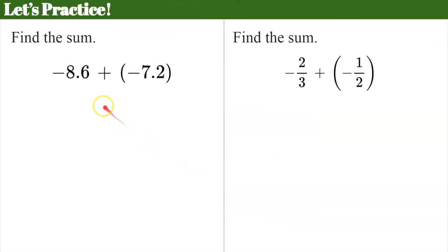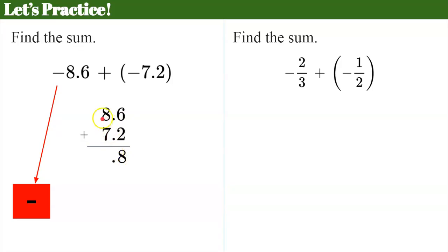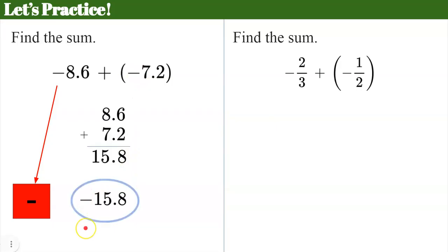Let's practice. I have rational numbers here because I have decimals and fractions — they are not integers, not whole numbers. We're going to find the sum of each. We have two decimals, both negative, so I'm going to make a note that my sum is going to be negative. The absolute values are positive, so we can ignore the signs and add our decimals. Lining up the decimal point: six plus two is eight, eight plus seven is fifteen. They were both negative, so my sum is negative fifteen point eight.